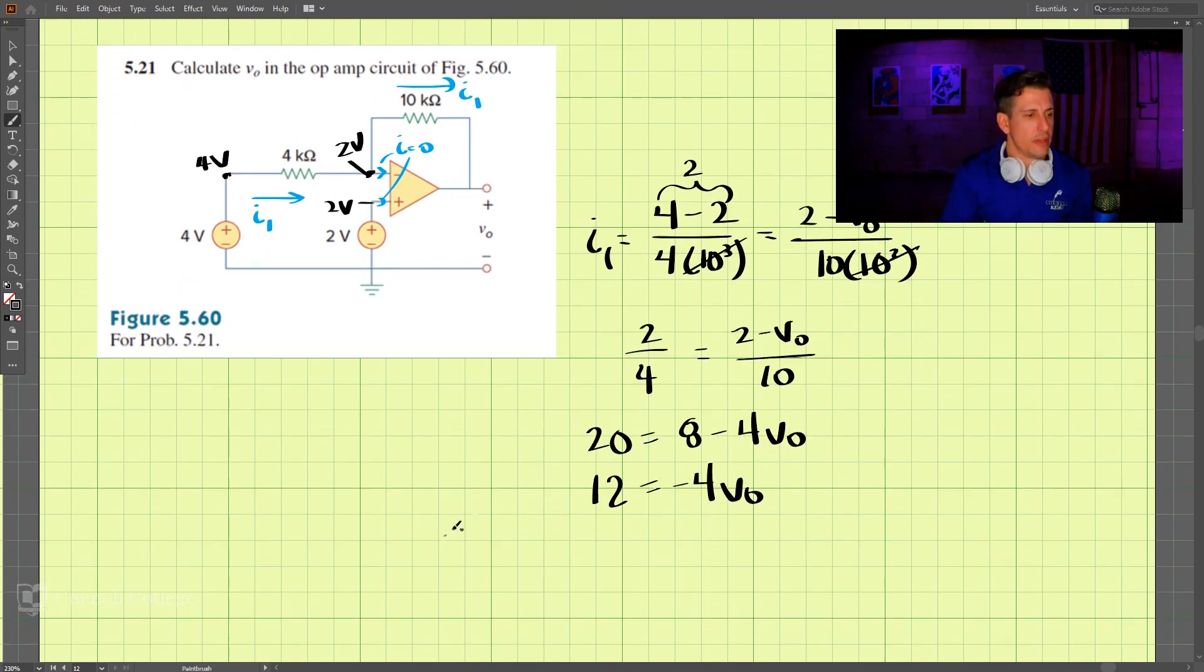And we found that by taking the current and setting those equal, because we know that the current is zero coming in through here. So that is our solution to problem 521.